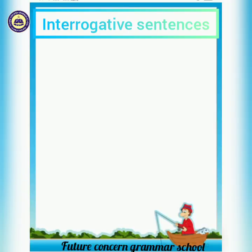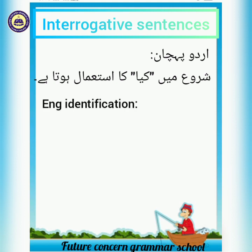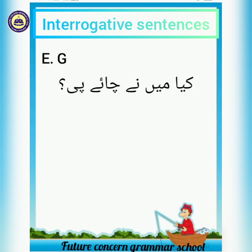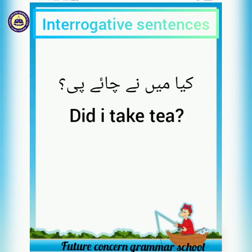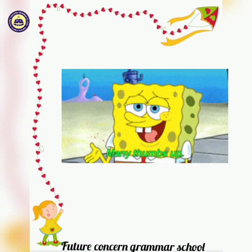The third type is interrogative sentences — in Urdu these are also called sawali jumle. Their identifying feature in Urdu is that they begin with 'kya.' In English, these sentences begin with 'did.' For example, 'Kya main ne chai pi?' — 'Did I take tea?'